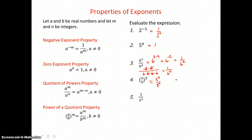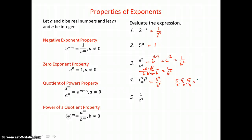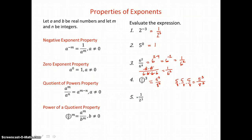If I show that by expanding, I have 3 factors of 5 over 8 in this product. When we multiply fractions, we multiply tops and multiply bottoms. So multiplying the numerators, I have 3 factors of 5 in the top. And multiplying the denominators, I have 3 factors of 8 in the bottom. So again, I end up with 5 cubed over 8 cubed.